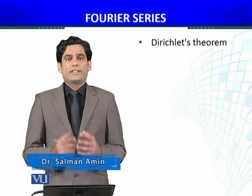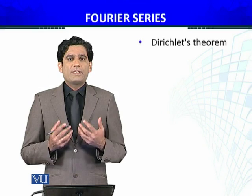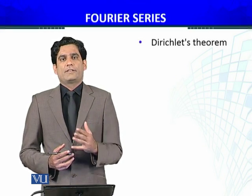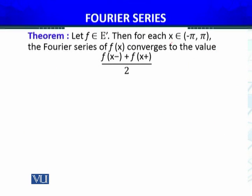We define the space E prime, where E was the set of piecewise continuous periodic functions defined on minus pi to pi. Let F belong to E prime. Then for each X, an interior point of minus pi to pi, the Fourier series of F of X converges to a specific value. X positive means we are moving towards X from the right side, and negative means moving from the left side. So F(x⁻) and F(x⁺), divided by 2 — the function may be discontinuous at that point.